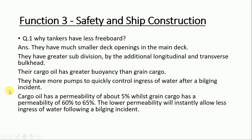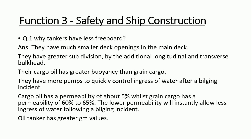The next point is that oil tankers have greater GM values. GM is the distance between the metacenter and the center of gravity. If this distance is more, the stability of the ship will be greater.